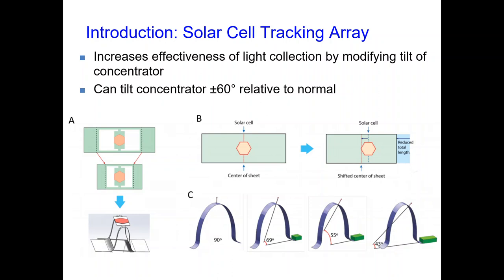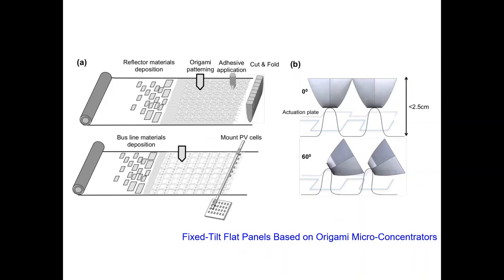Our current design allows the concentrator to tilt plus or minus 60 degrees relative to the perpendicular, allowing a total effective range of 120 degrees. A final way you can improve the effectiveness of solar cells is to use a concentrator. Concentrators allow light to enter from the top and redirect it to the bottom where the semiconductor is located, collecting light from a wider area while using less total semiconductor, which is the most expensive part. Optimizing the design of these concentrators was the main focus of this project.